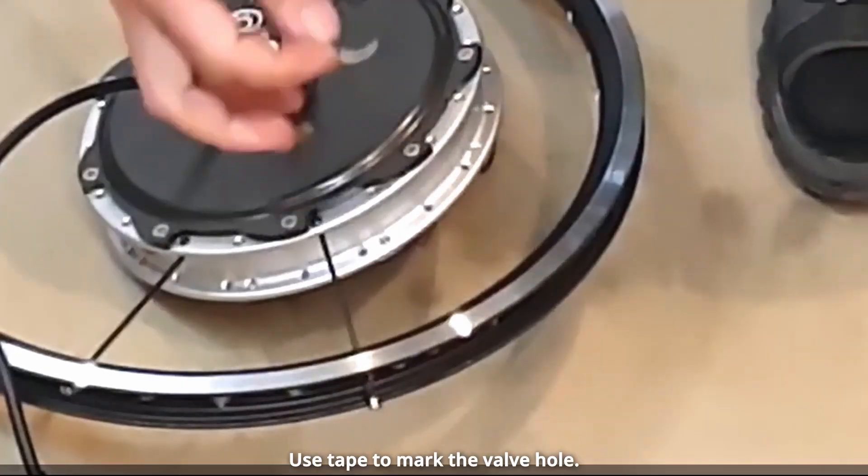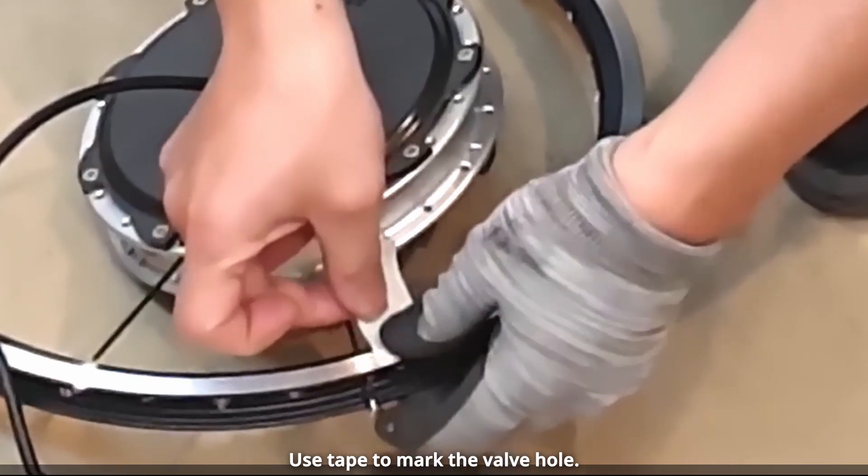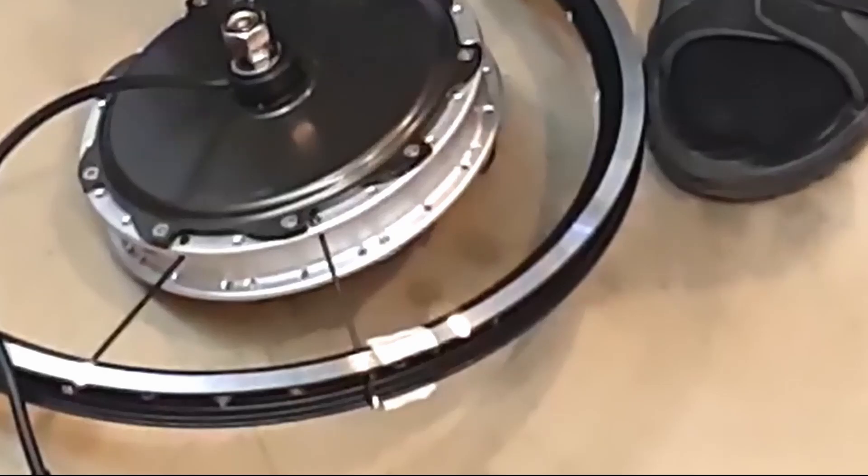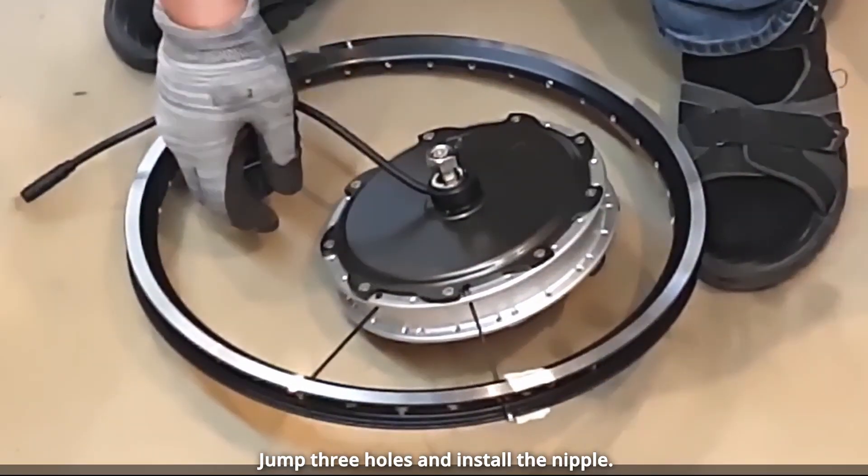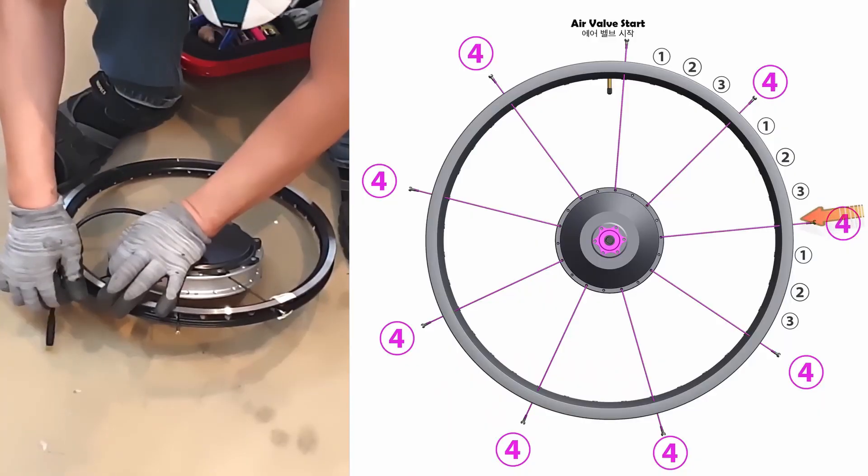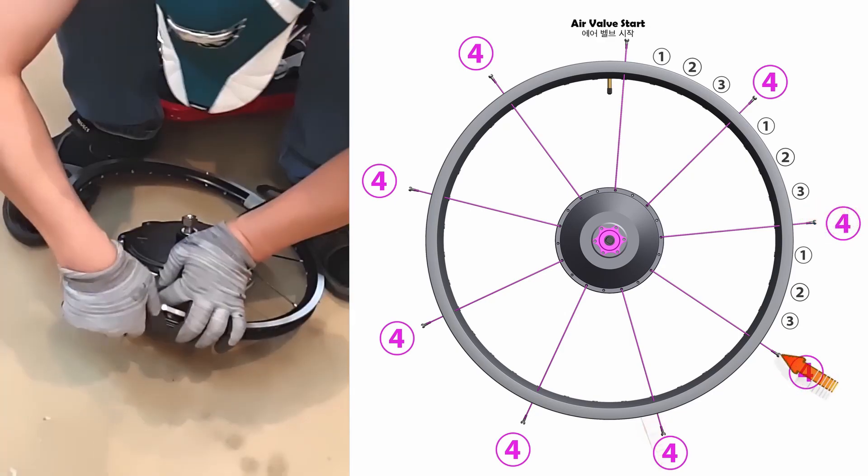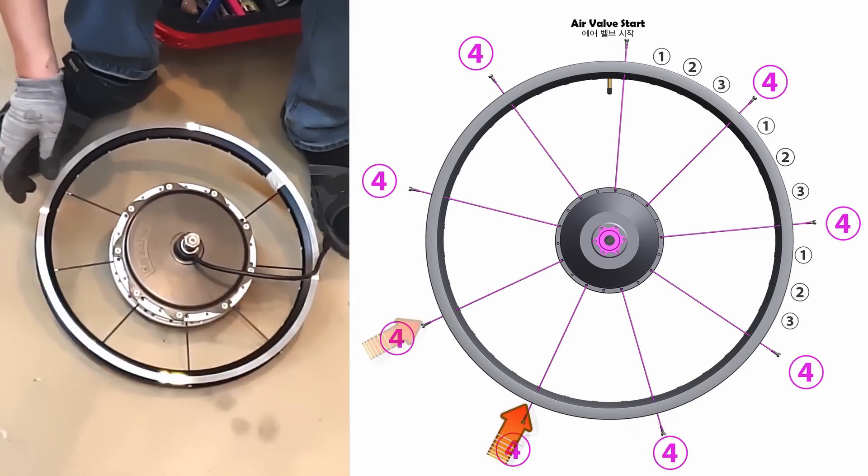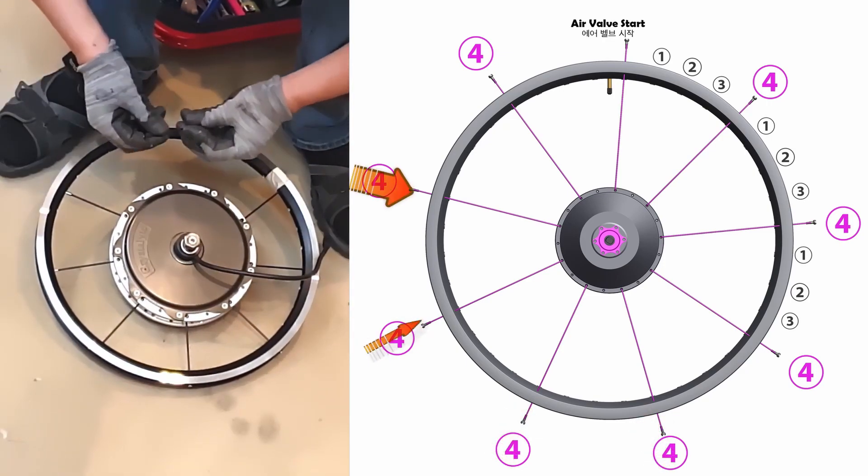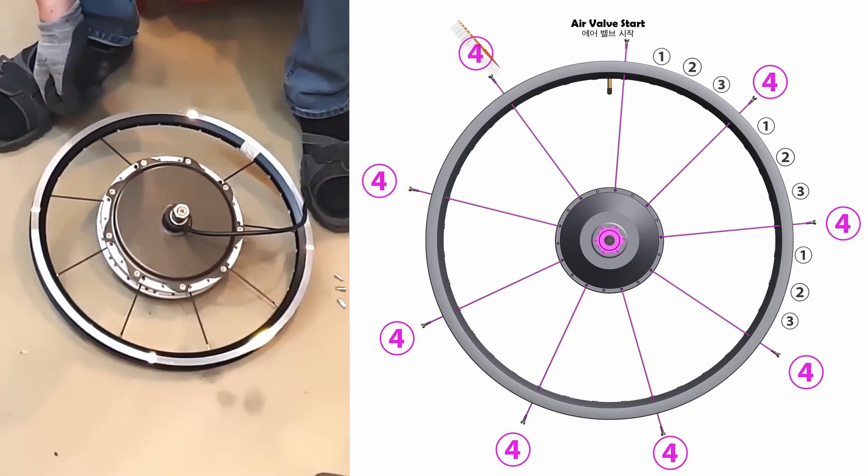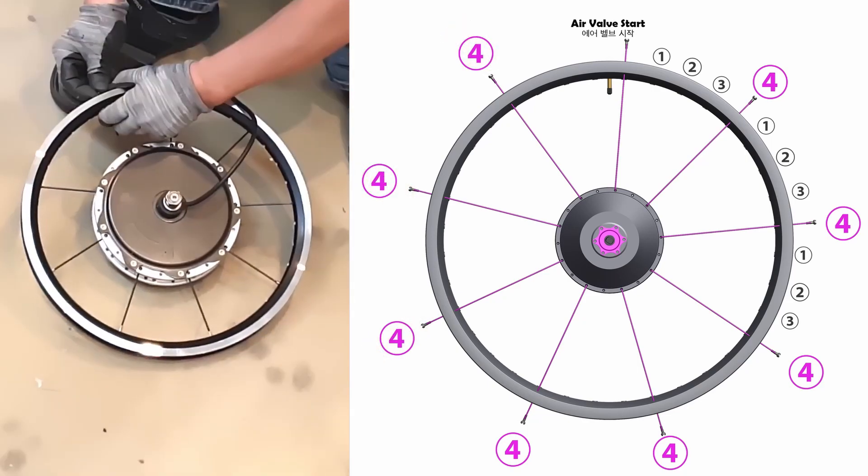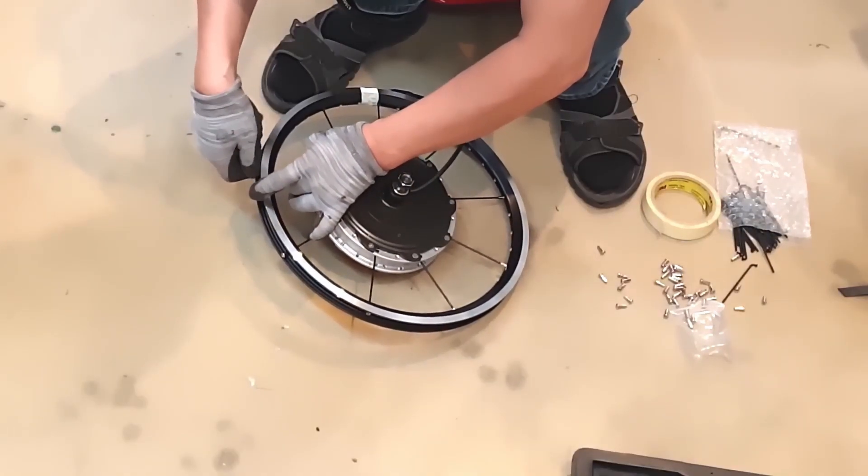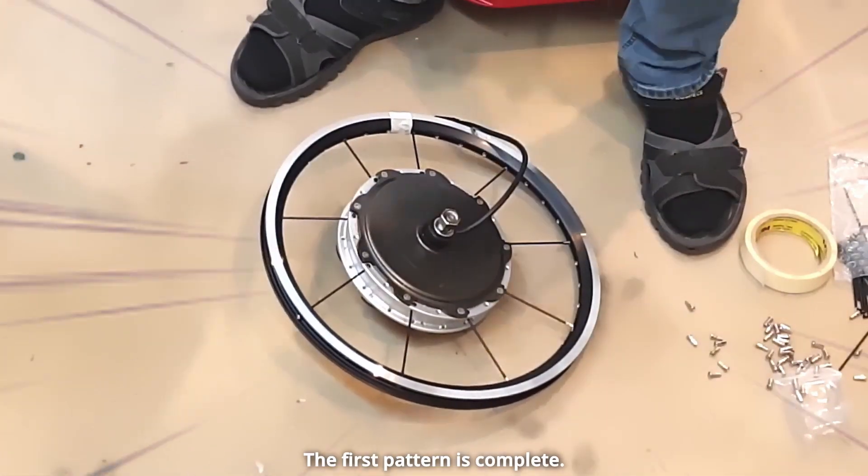Use tape to mark the valve hole. It helps with wheel alignment. Jump three holes and install the nipple.